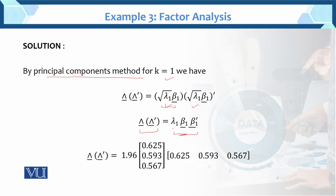Here lambda 1 is the eigenvalue and beta 1, beta 1 prime are eigenvectors. Lambda 1 equals 1.96, and beta 1 has value 0.625. After calculation, we first check the order: we have 3 rows and 1 column times 1 row and 3 columns, giving a 3×3 matrix, which is then multiplied by 1.96. So first: 0.625 × 0.625, then 0.625 × 0.593, then 0.625 × 0.567.